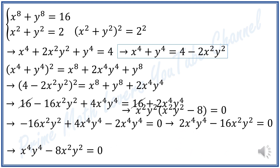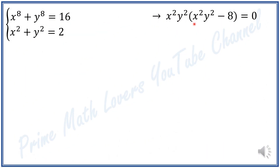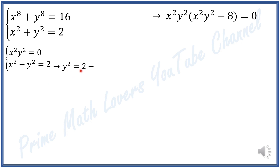Now I solve this equation. We have two factors multiplied together equal to zero, so I set each factor equal to zero: x²y² equals 0, or x²y² minus 8 equals 0. For the first case, x²y² equals 0, and we also have x² plus y² equals 2. I write y² equals 2 minus x², and substitute into the first equation to get x² times (2 minus x²) equals 0.